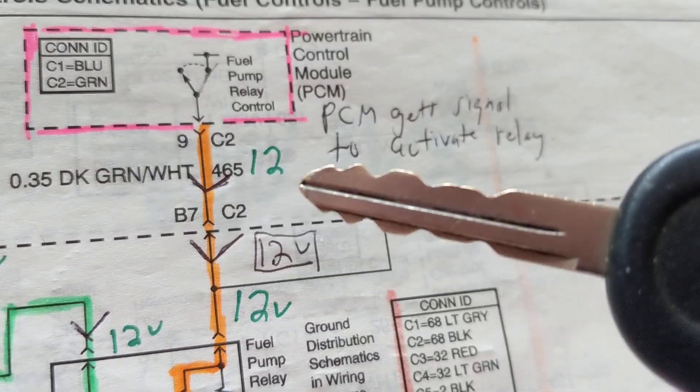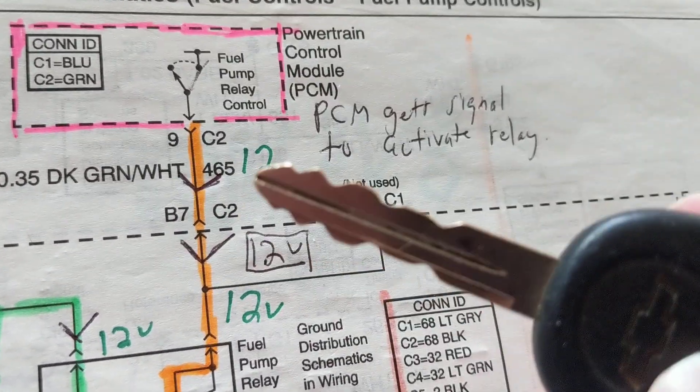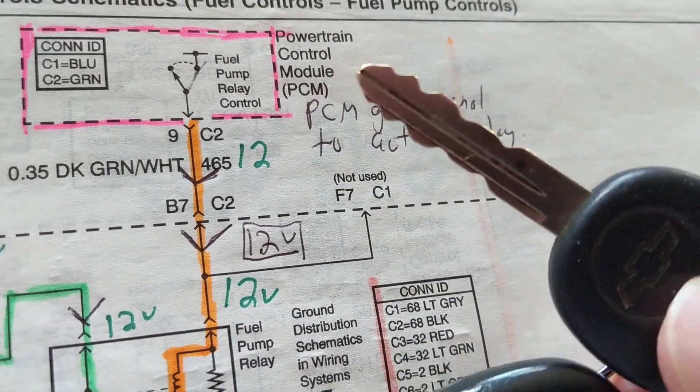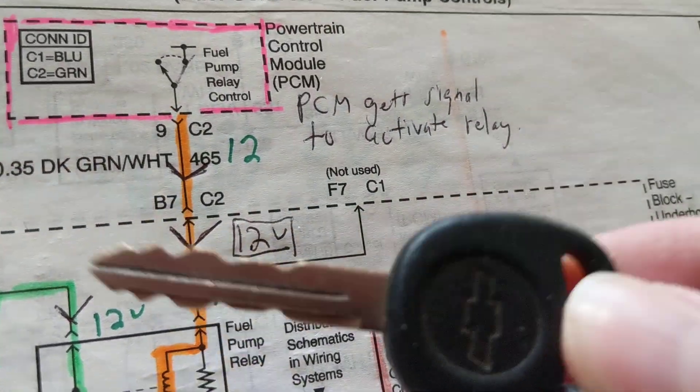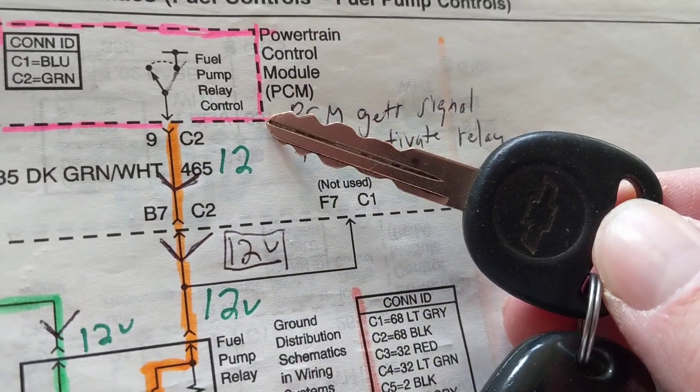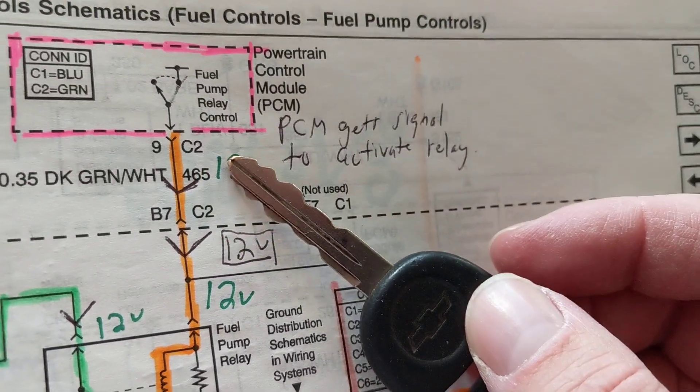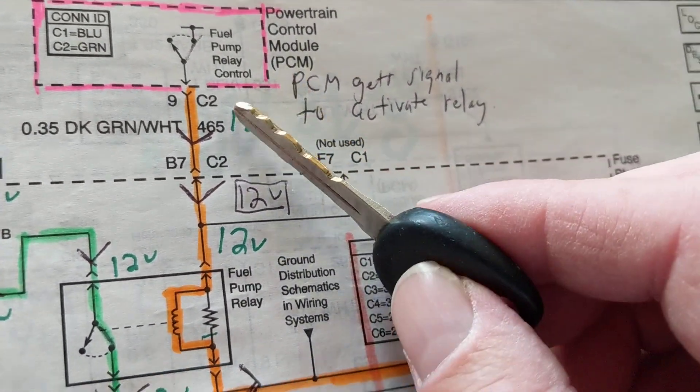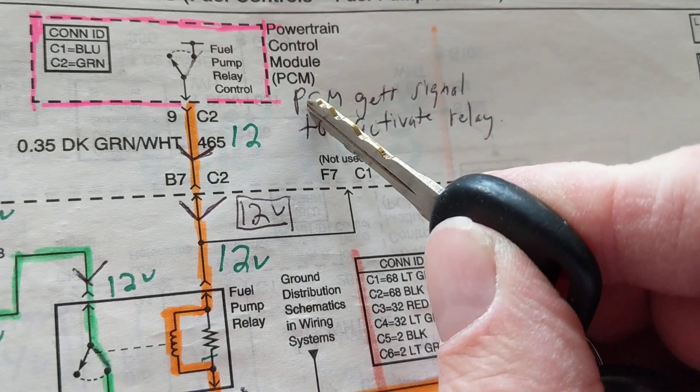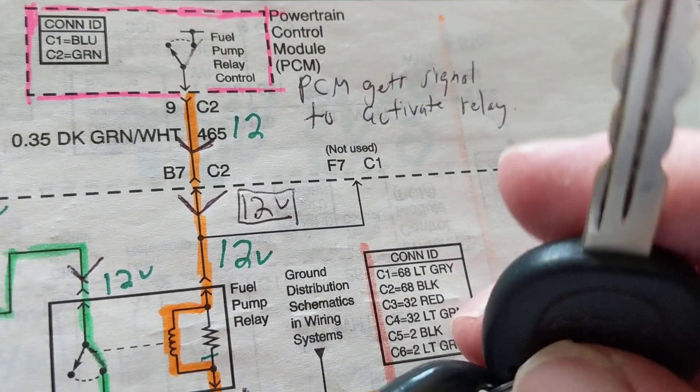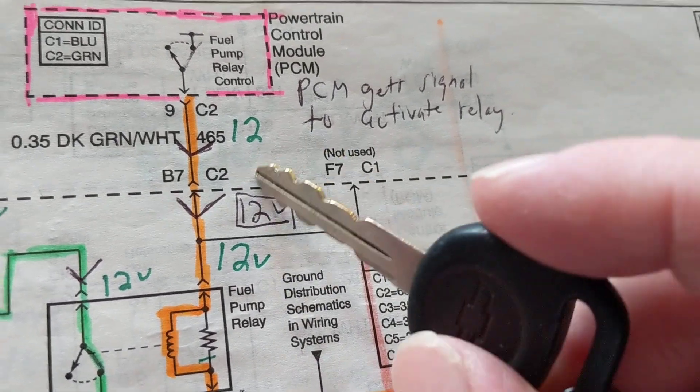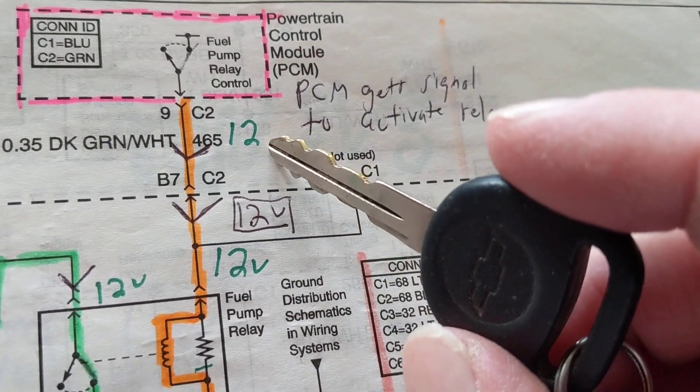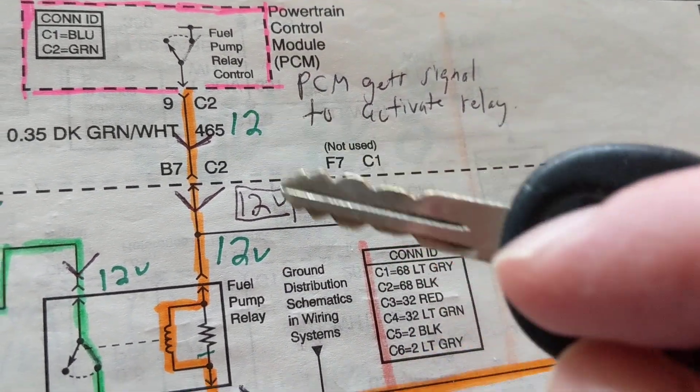Now this is what I'm looking for, this is the information I'm looking for. That means the person turning this key has the right key with the right transmitter on, with the right chip on it. Now he'll talk to the BCM, the body control module. The body control module will say to the PCM, the powertrain control module, okay, I'm gonna give 12 volts to the relay.